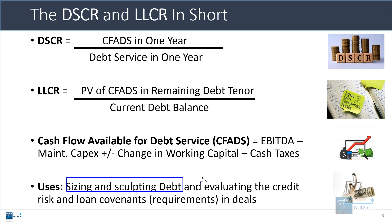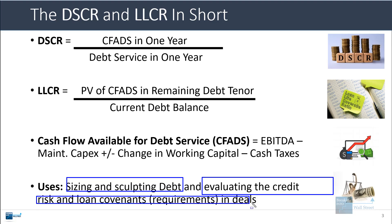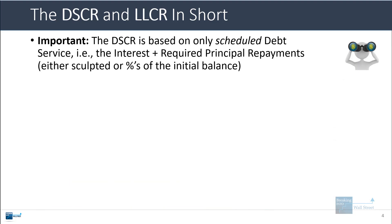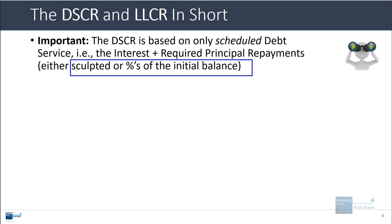You also use them to evaluate credit risk and loan covenants in deals. With the debt service coverage ratio, one important point is that it's based on only the scheduled debt service — the interest payments and the required principal repayments sent in advance when the loan is first issued. These could be sculpted or based on percentages of the initial loan balance, but if there's some type of optional repayment, you don't count that in this ratio.